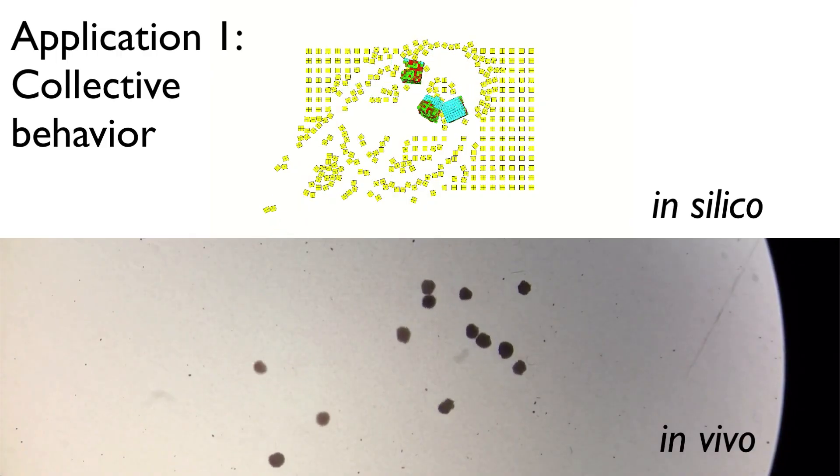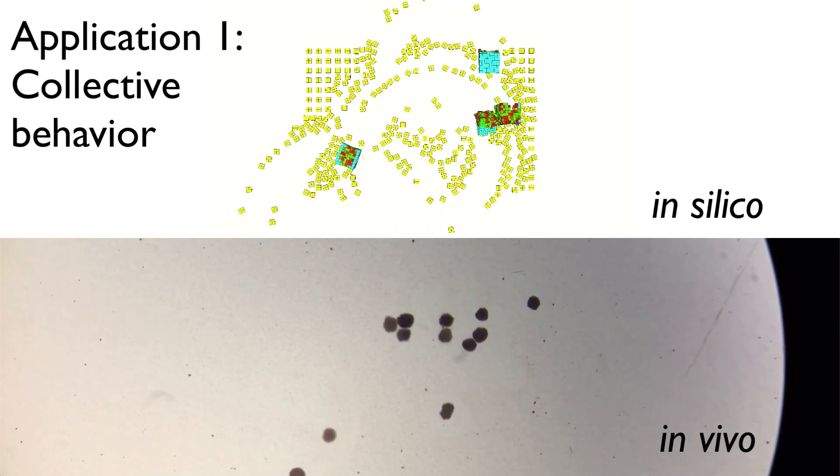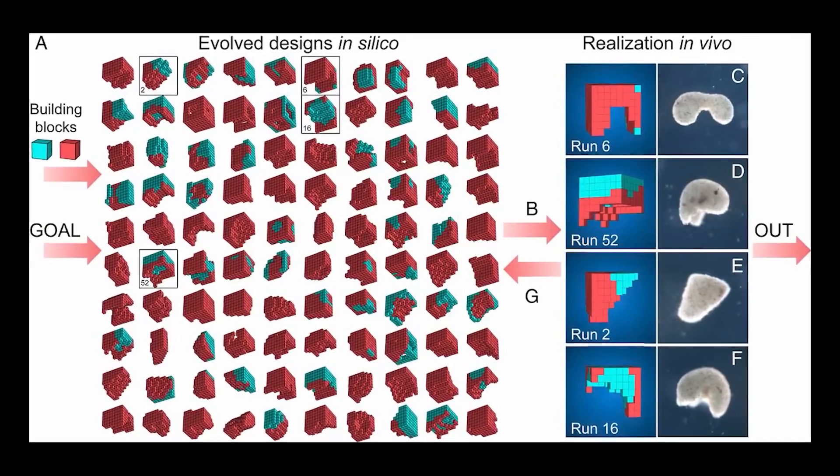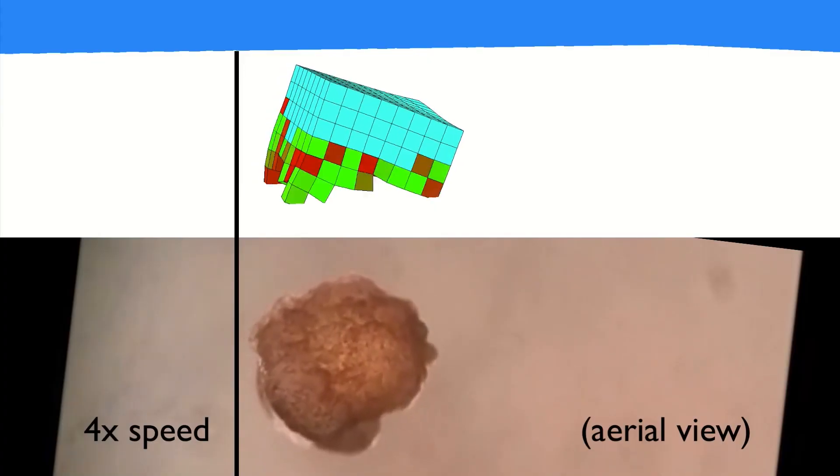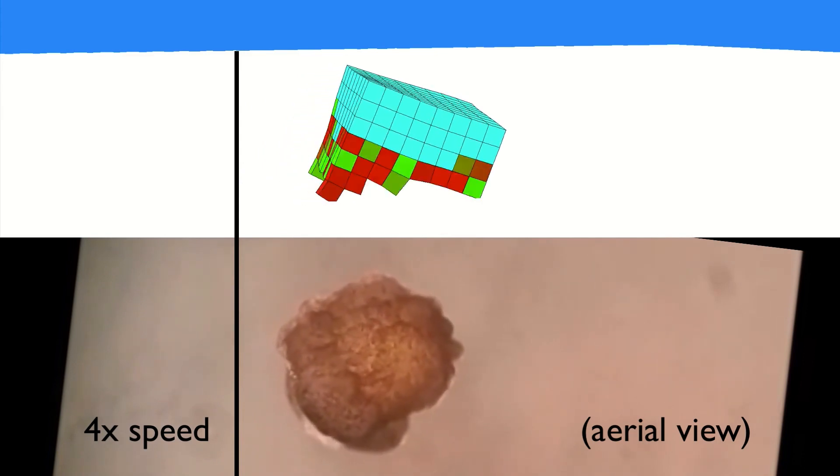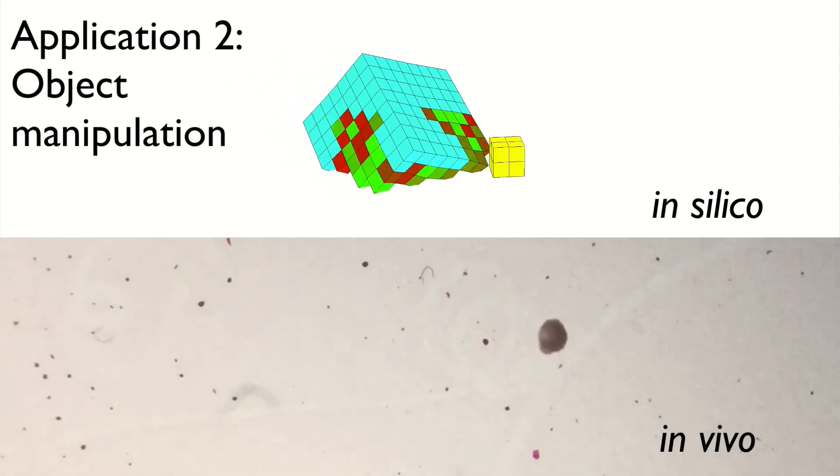They programmed it with a set of rules on how the extracted frog stem cells behave in real life and the algorithm started by randomly assembling different shapes of hundreds of different cells and then simulated how well they did compared to some sort of performance metric like how far they could move or how quickly they could move or how big of a pile of cells they could collect.